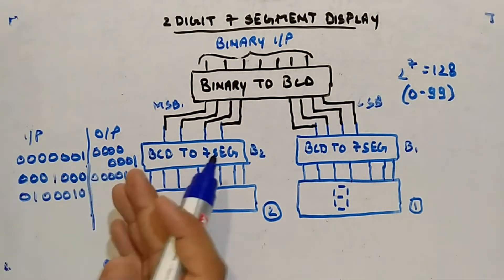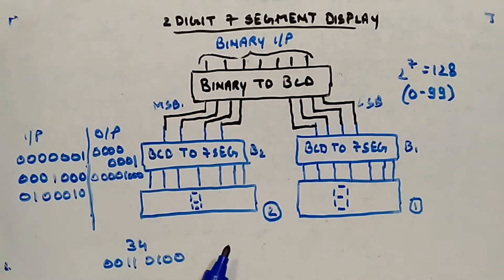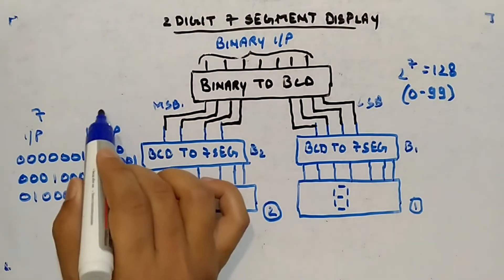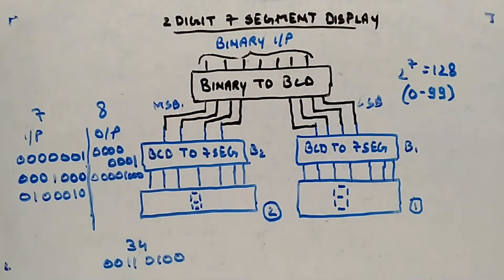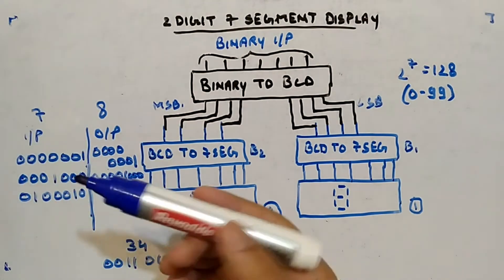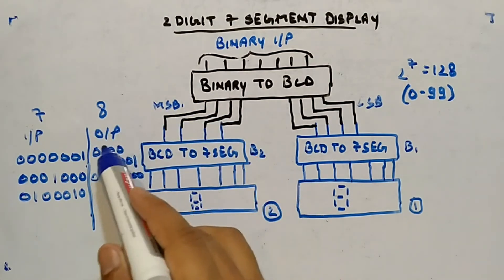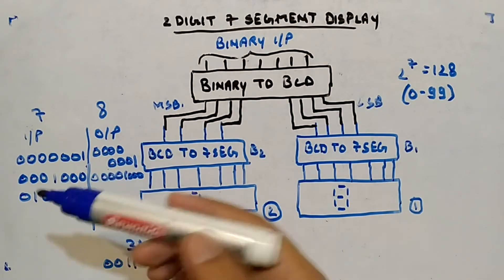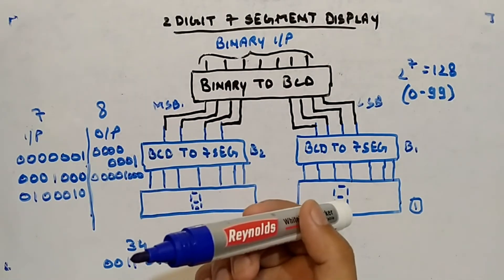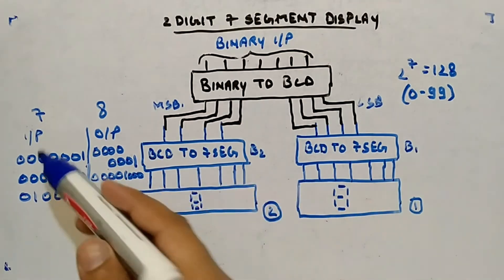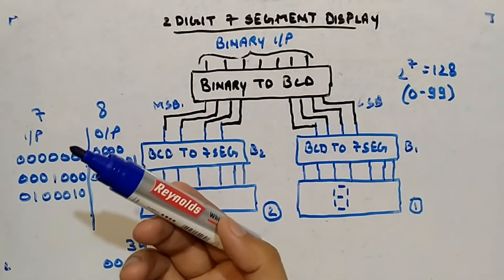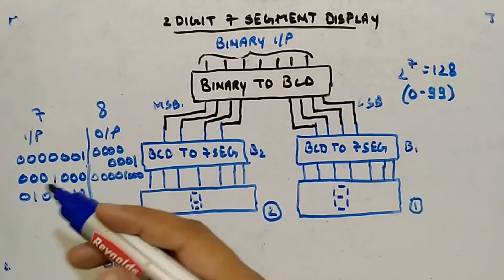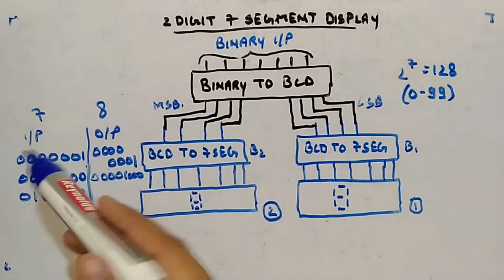So input variables are total seven and output variables are total eight. A seven-variable Kmap will be used, and for each of the eight output variables you will calculate the expressions and then the circuit will be designed. Clearly, a seven-variable Kmap is not a good way to solve this — a computerized approach will be better.